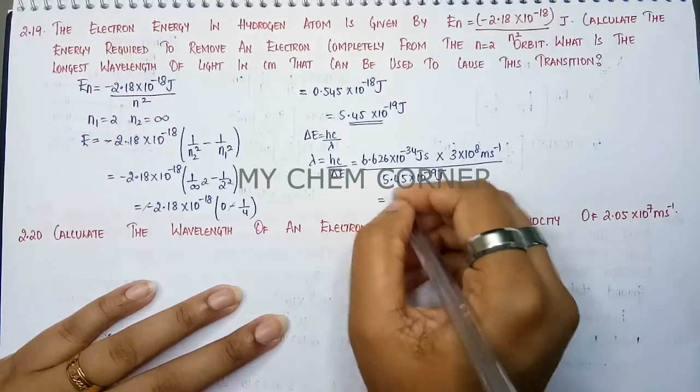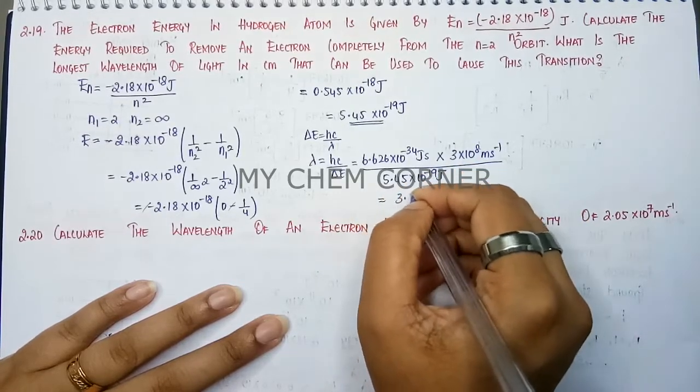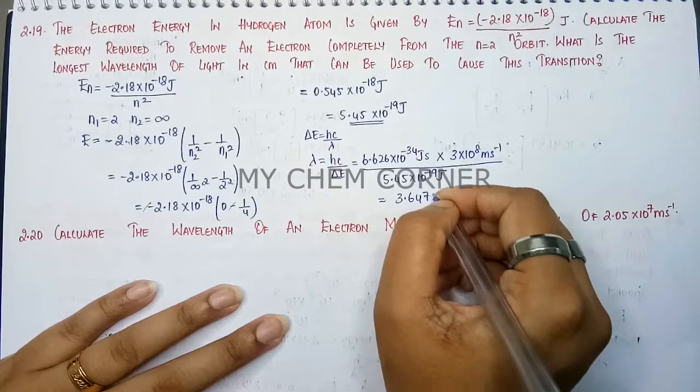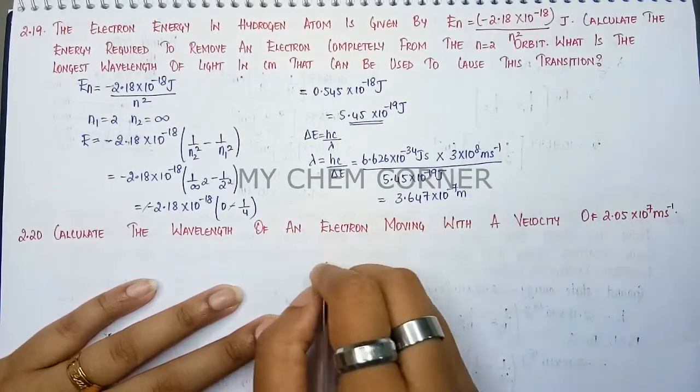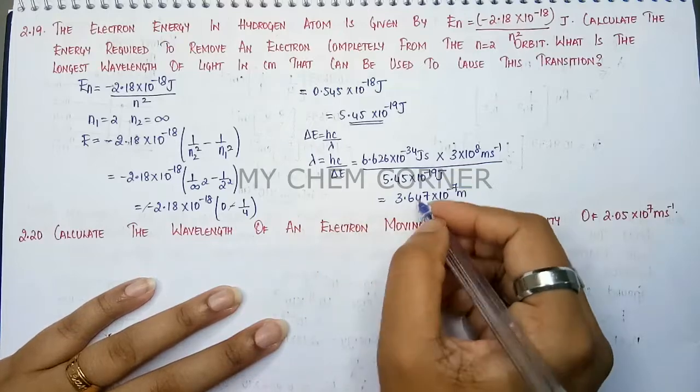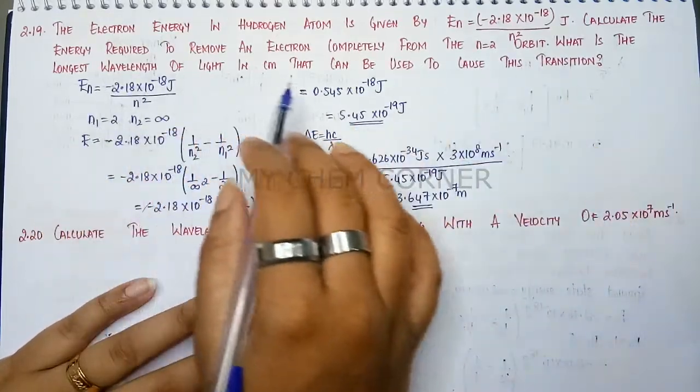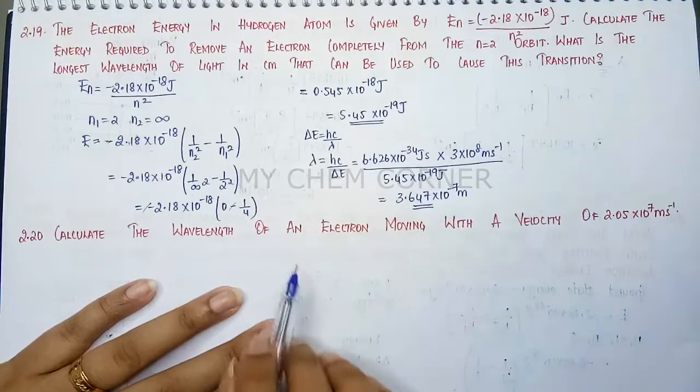When we simplify this, you will get 3.647 into 10 to the power minus 7 meters. This is going to be the answer for what is the wavelength of light that is used for this particular transition.